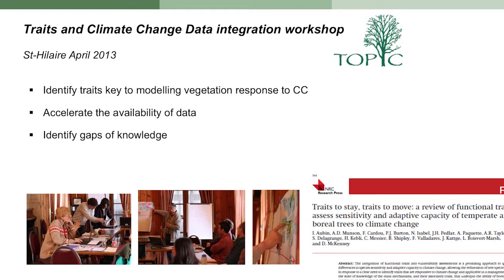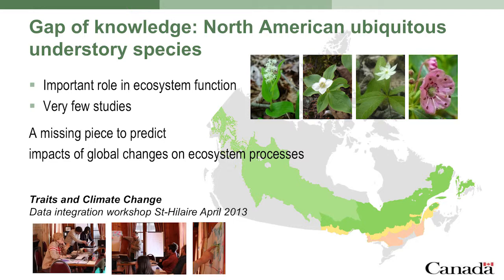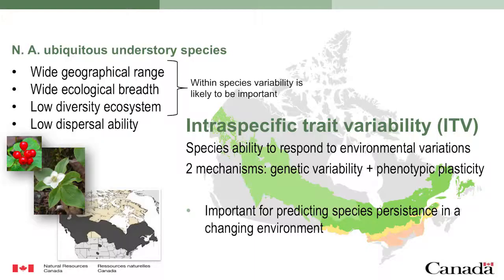The idea came from a workshop where we were trying to conceptually identify key traits for modeling vegetation response to climate change. We identified some gaps of knowledge — one being that we don't have information about North American ubiquitous understory species. These plants have a really broad range, found everywhere in a wide variety of environments, and just by their biomass they play an important role in ecosystem function. But there are very few studies on those species because traditionally we studied more the invasive ones or the rare species.